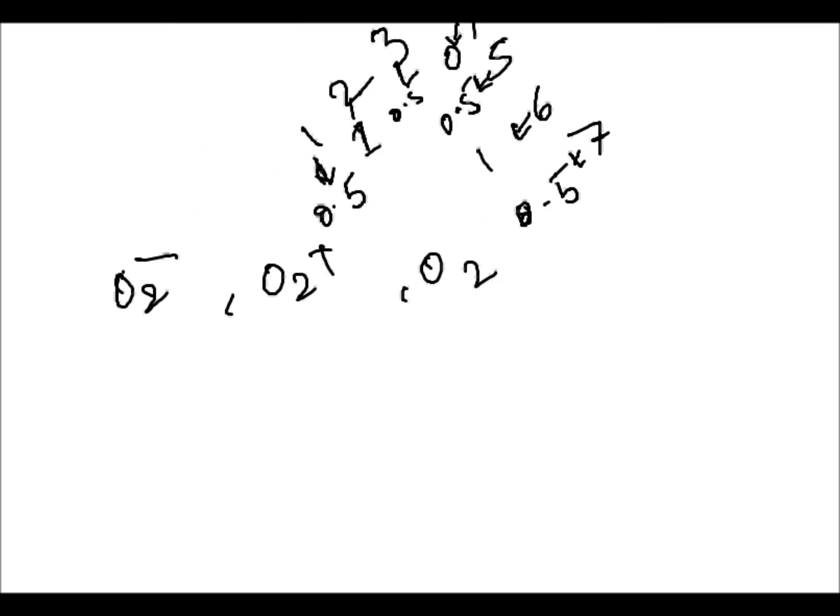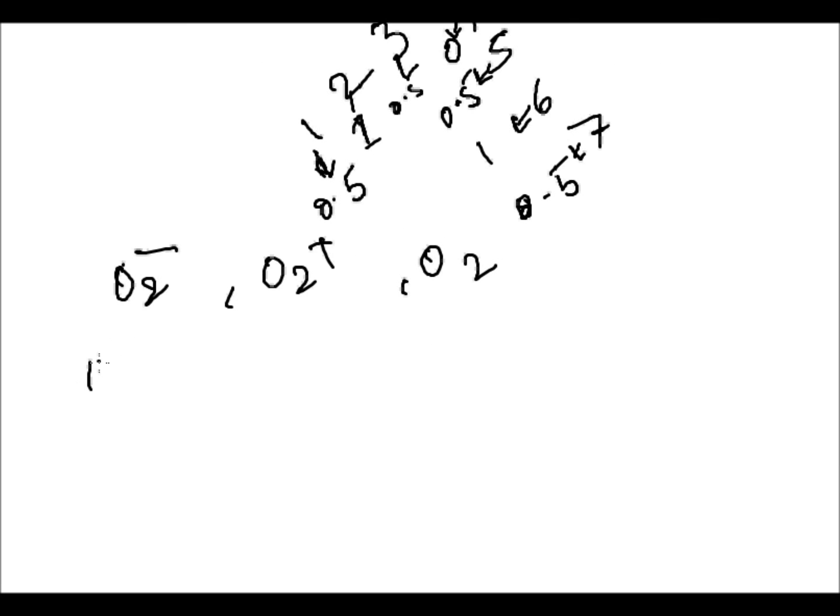We can calculate in 1 minute. For O2 it is 16 plus 1, here. For O2 plus, 16 minus 1. For O2 it is 16. Here it is 17, here it is 15, here it is 16.